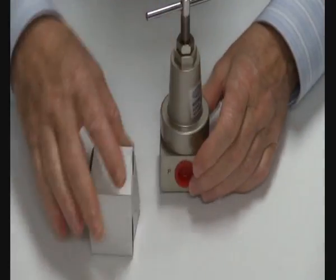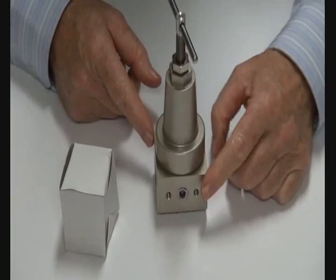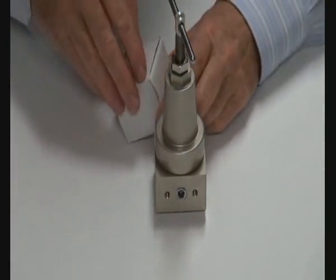The regulator has two ports: port P is the inlet and port A is the outlet. There is also a gauge port for the pressure gauge.